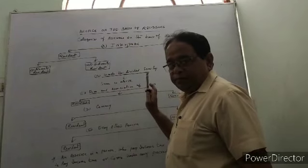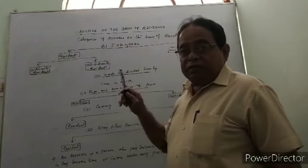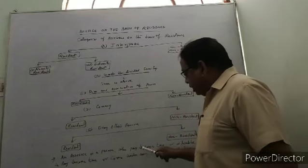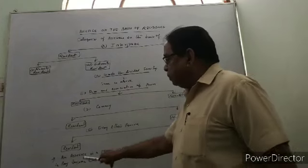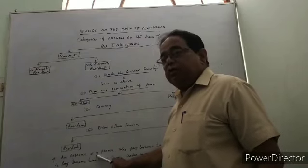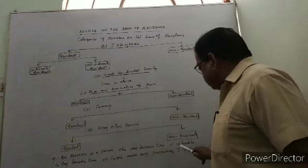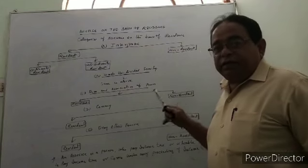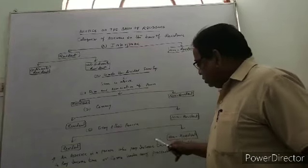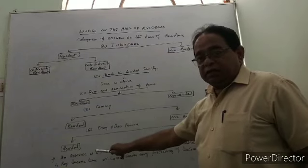An assessee is a person who pays income tax or is liable to pay income tax. He may not be making the payment of income tax right now, but later on he will make the payment. He is liable to make the payment of income tax or comes under any proceeding of income tax. Some litigations are there, some proceedings are going on against that assessee or that person — so that person will also be treated as an assessee.